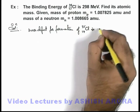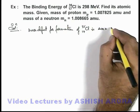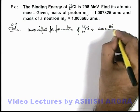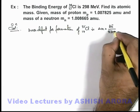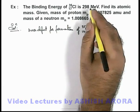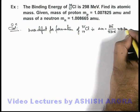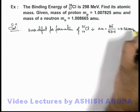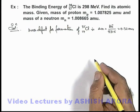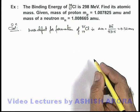This can be given as delta m which is binding energy divided by 931.5. As binding energy is already given in million electron volt, this will be 0.32 amu when you substitute the value of binding energy as 298 MeV.